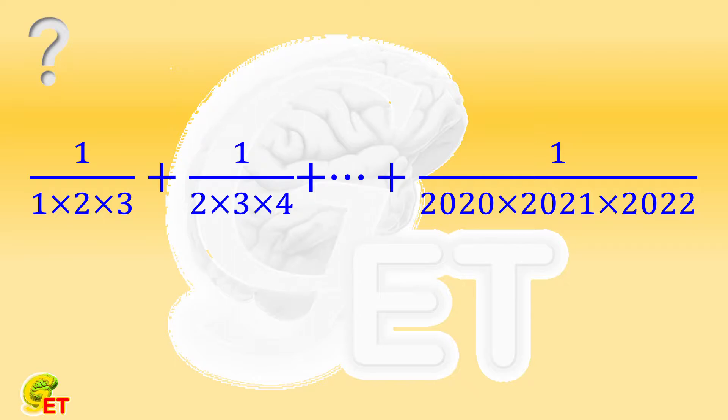The numerators are always 1, and the denominators are the products of 3 consecutive natural numbers. The last term is 1 over 2020 times 2021 times 2022. Can you solve this question? If you want to give a try, pause the video please, and we will come back soon.